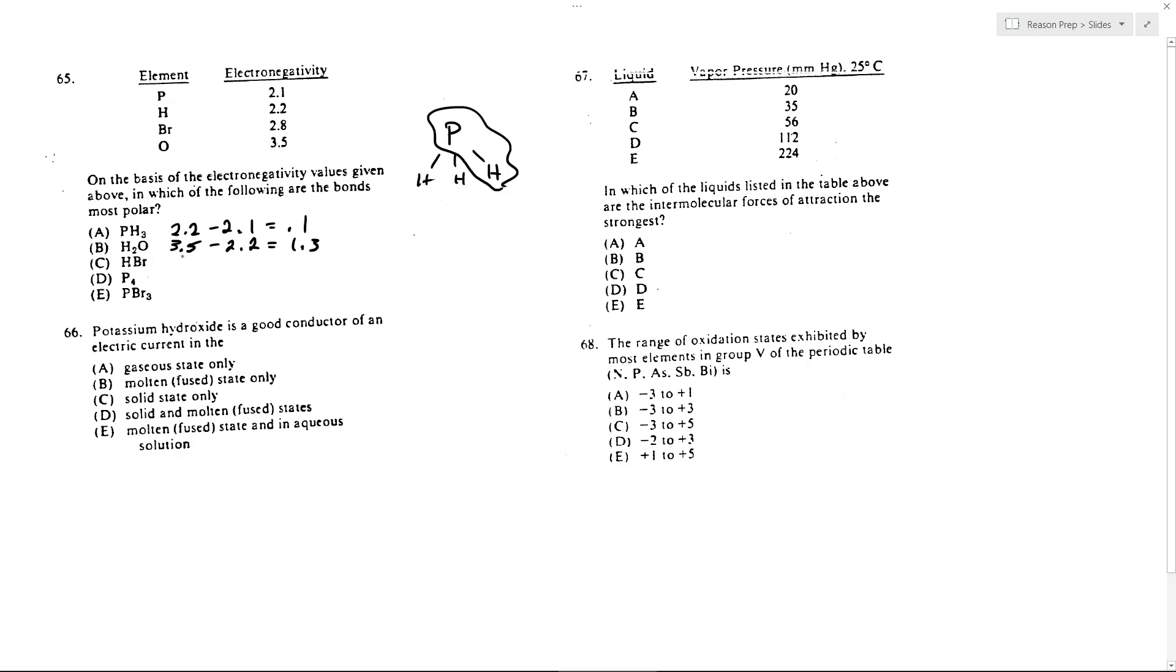HBr would be 2.8 minus 2.2, so that's 0.6, so we can get rid of A and C. P4, you've just got P's linked to P's, so that's just 0. There's no difference. It's nonpolar, in fact. PBr3 would be 2.8 minus 2.1, 0.7, no good. So best answer here is B.